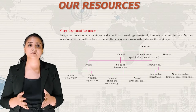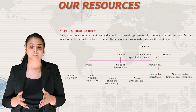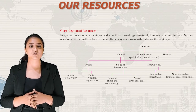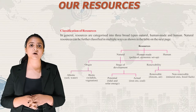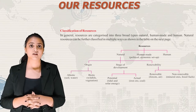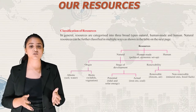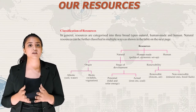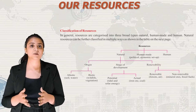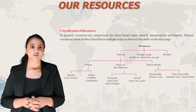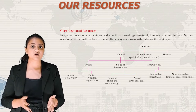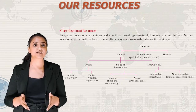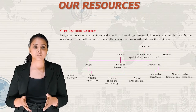In the human-made category, we have political, economic, etc. Natural resources are divided into three subcategories: origin, stage of development, and renewability. Based on origin, there are two types: abiotic, which includes soil and water, and biotic, which includes wildlife and vegetation.